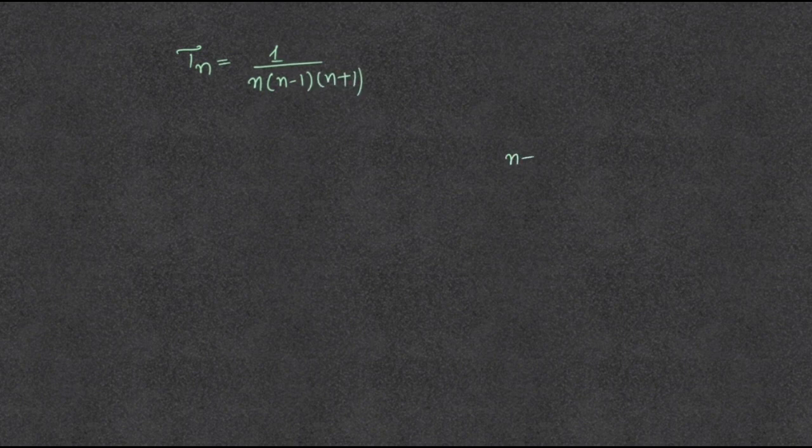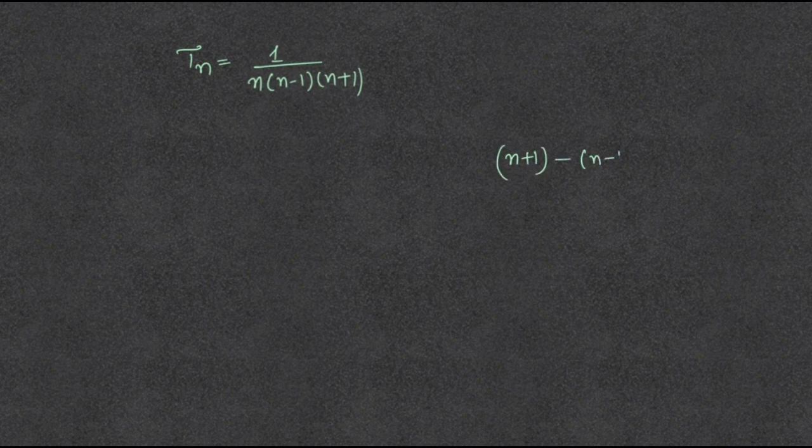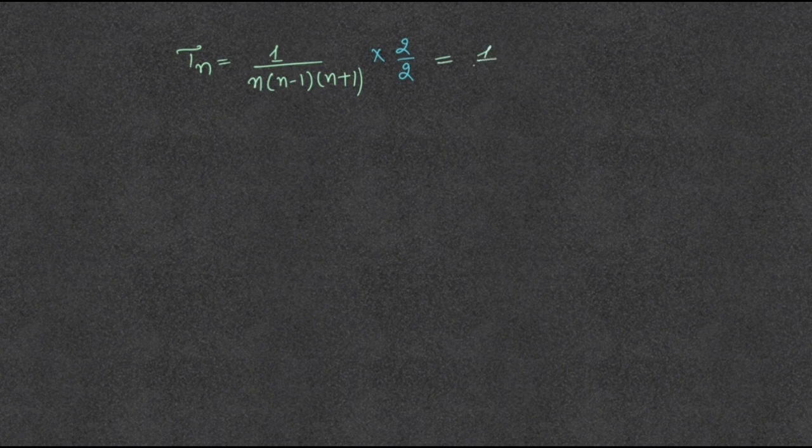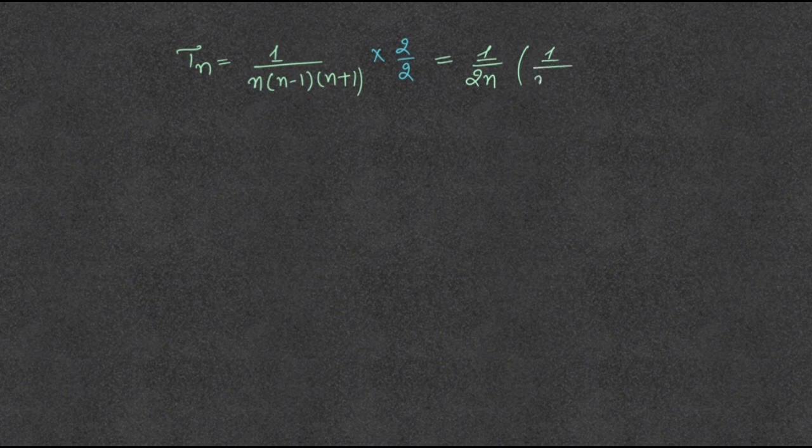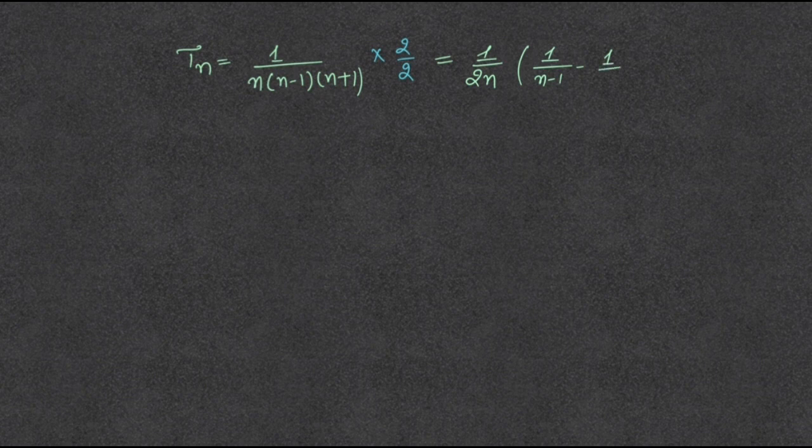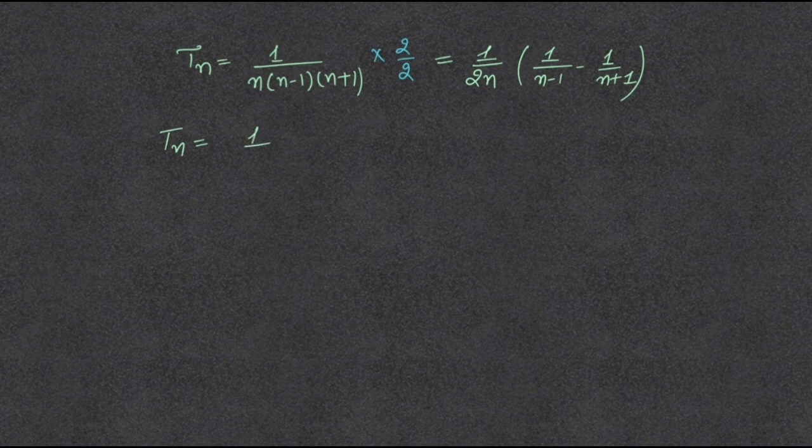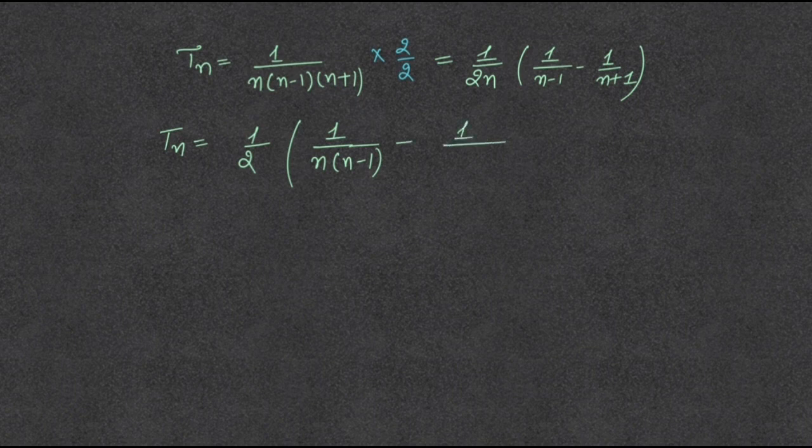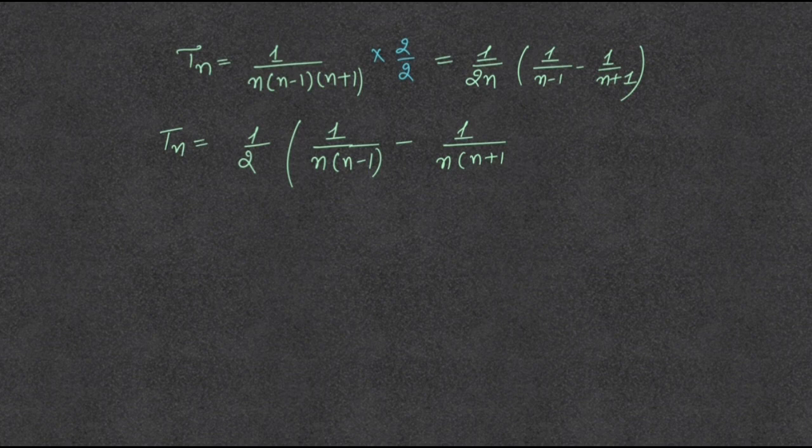The difference between n plus 1 and n minus 1 is 2. Multiplying and dividing by 2, it becomes 1 upon 2n bracket 1 upon n minus 1 minus 1 upon n plus 1. This equals n into n minus 1 minus 1 upon n into n plus 1.